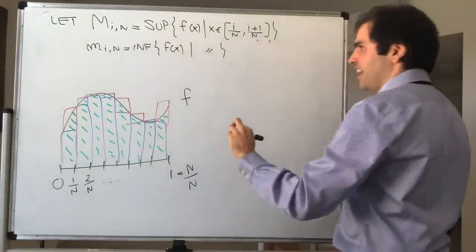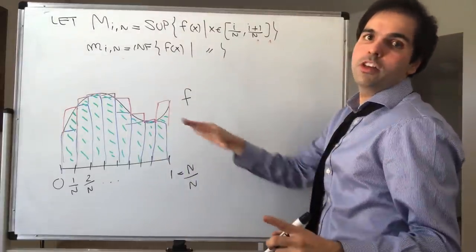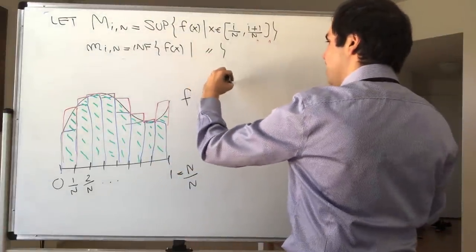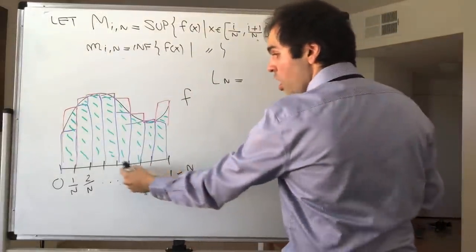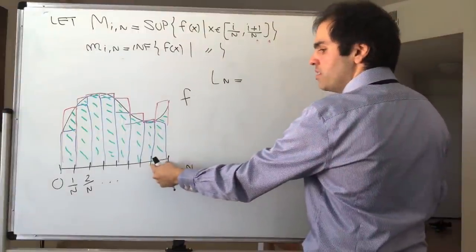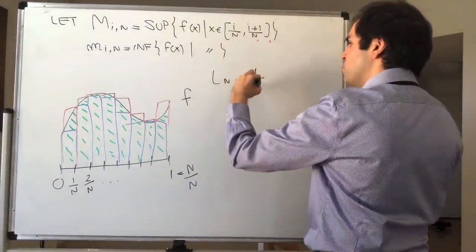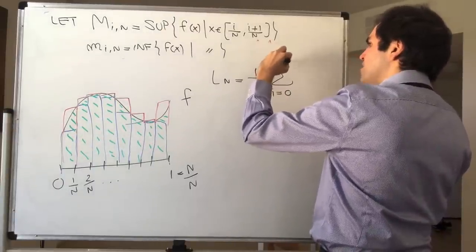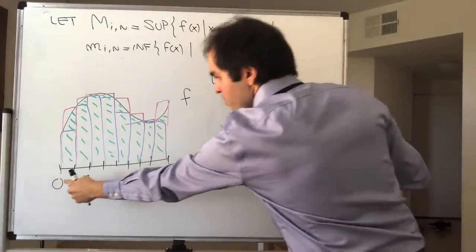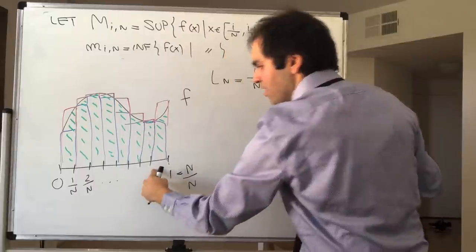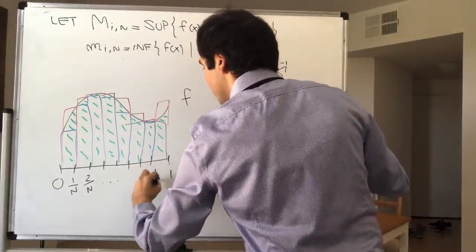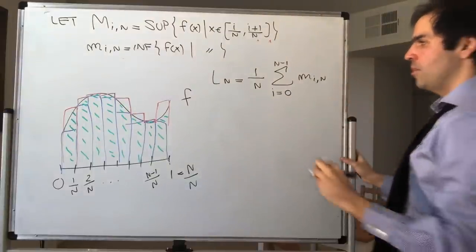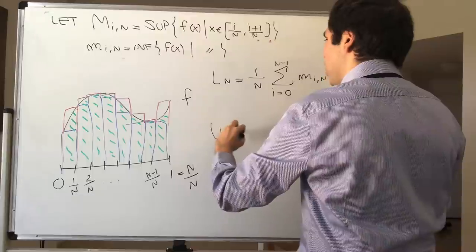Therefore, consider the following two sums. We want to sum the lower (blue) rectangles and the upper (red) rectangles. Call L_n to be the lower sum — since all rectangles have width 1/n, that is (1/n) times the sum from i=0 to n−1. We start from 0, 1, 2, and to have n values we stop at (n−1)/n, because that's the last rectangle. So L_n is the lower sum and U_n is the upper sum.